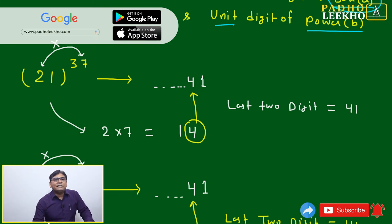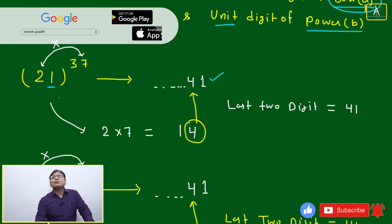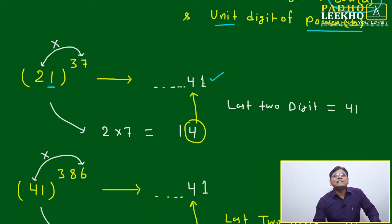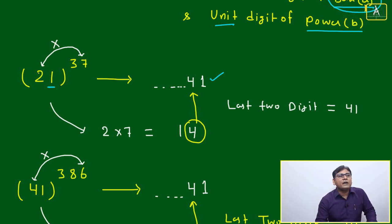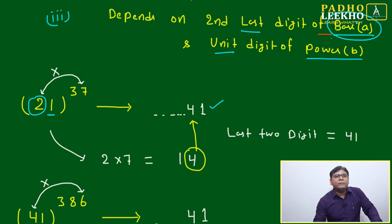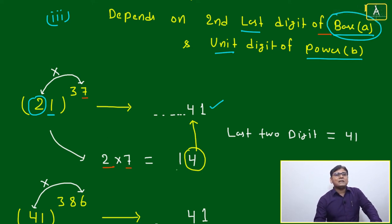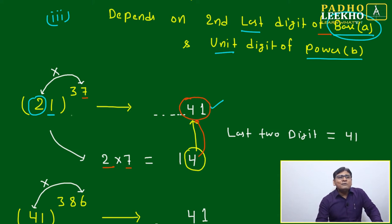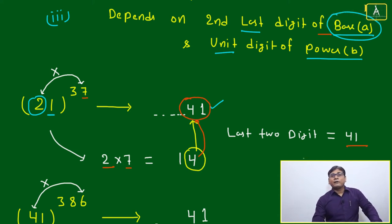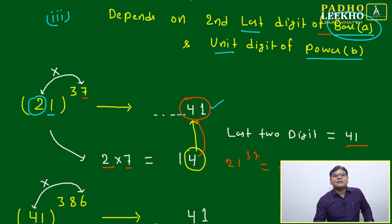Example: 21 to the power 37. Unit digit is 1 — that is fixed. The second last digit of the base (21) is 2. The unit digit of the power (37) is 7. Multiply: 2 × 7 = 14. Take the unit digit: 4. So the last two digits of 21^37 are 41. The full expansion is a very big number, but the last two digits will be 41.